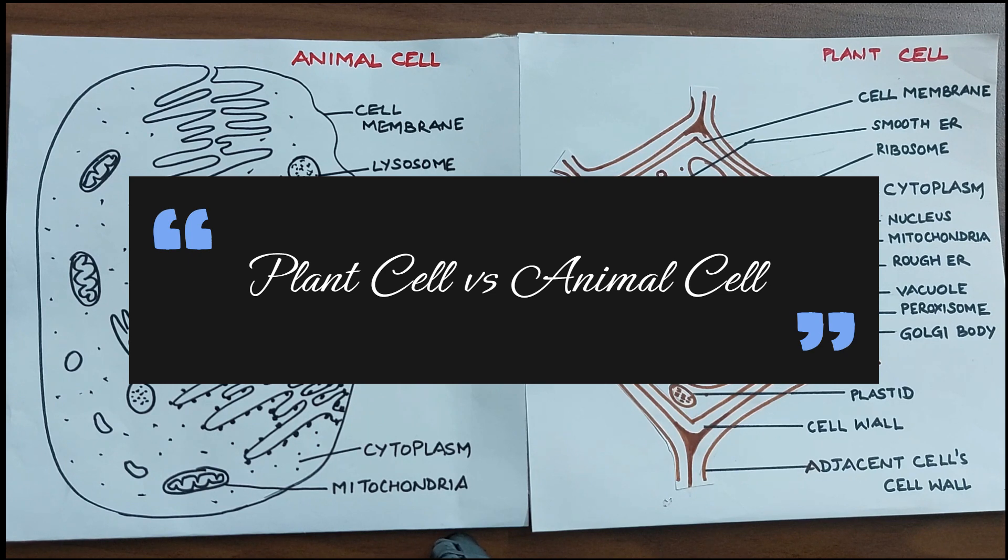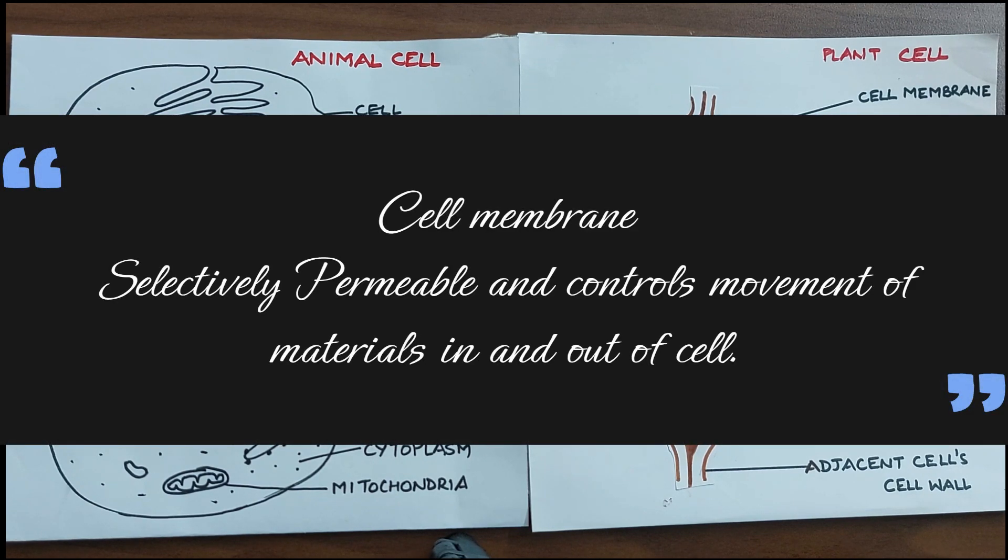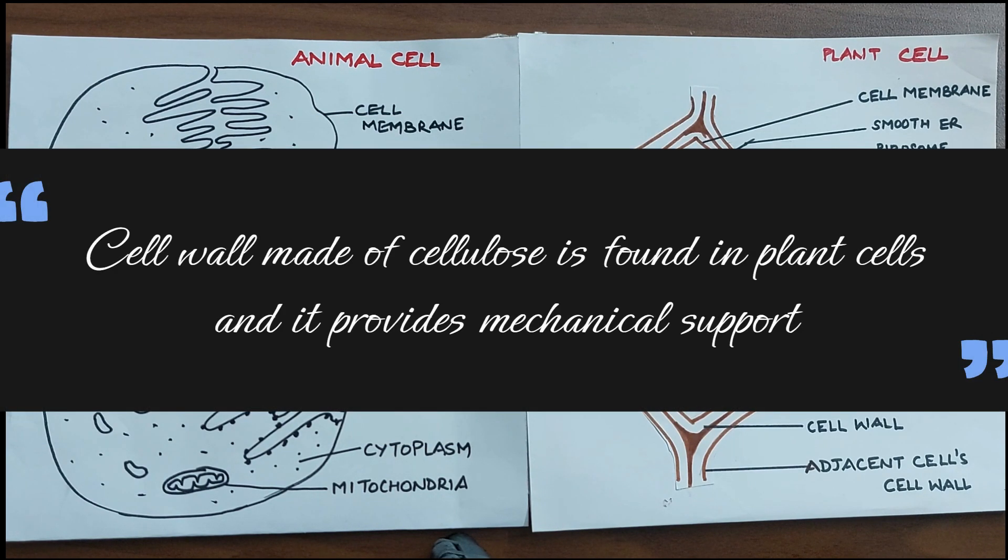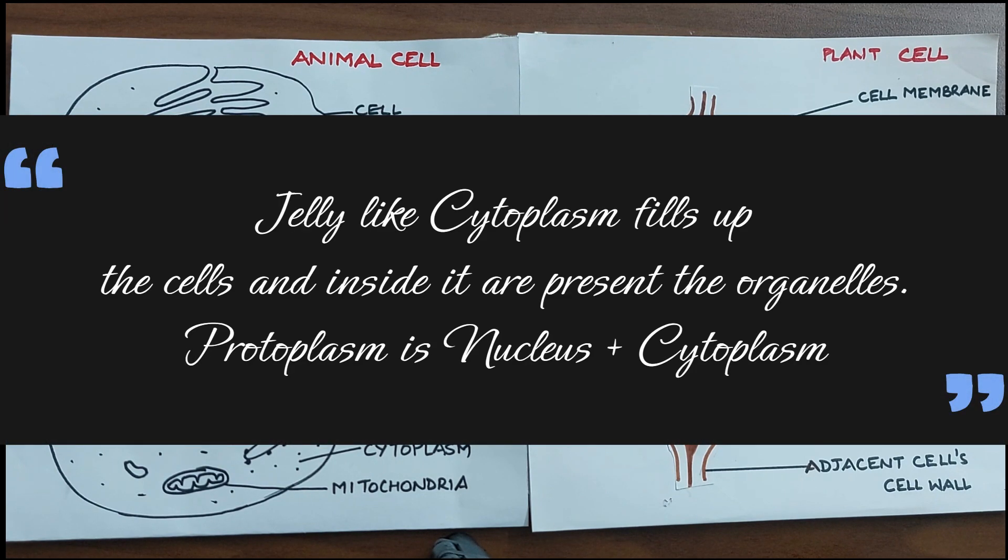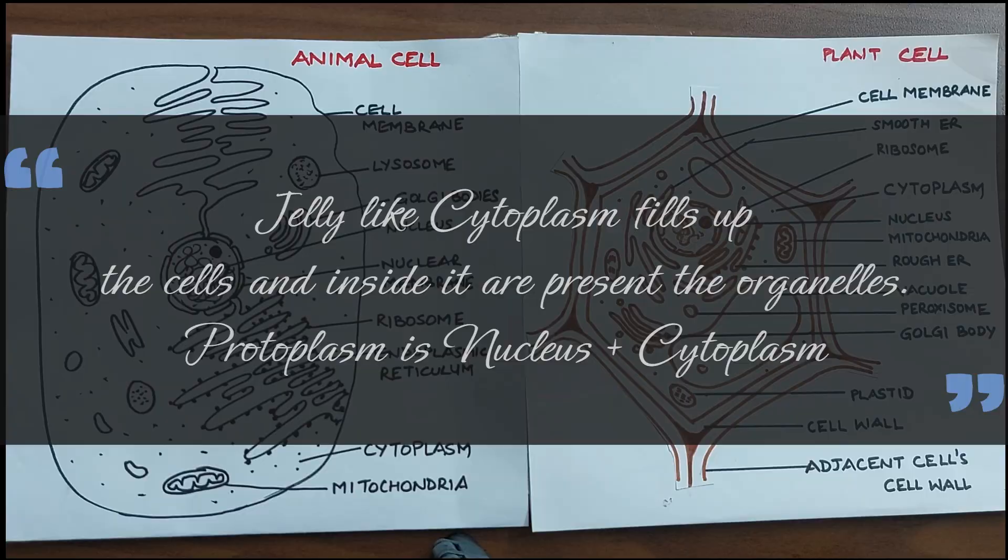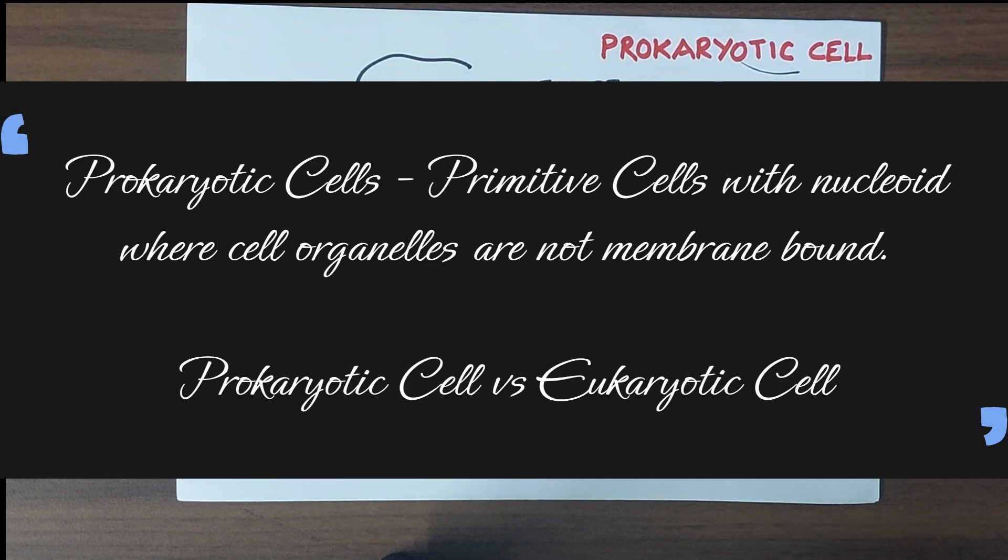We also saw certain organelles like the cell membrane which is a semi-permeable membrane and regulates the movement of molecules across the membrane in and out of the cell. We saw the cell wall which is made up of cellulose and provides structural support to the cell and it's found only in the plant cell. We saw the cytoplasm as a jelly-like substance which fills up the cell and has all the organelles inside it. Then we saw the structure of the primitive cells which are the prokaryotic cells which do not have a nucleus but instead have a nucleoid and where the organelles are not membrane bound.